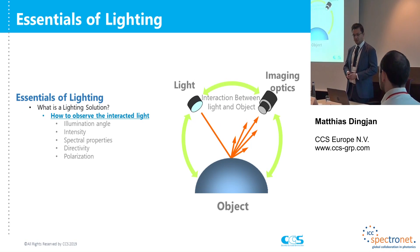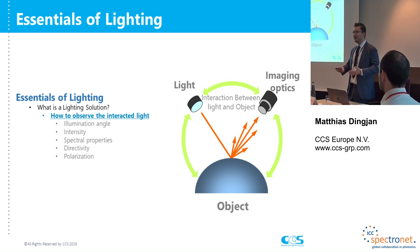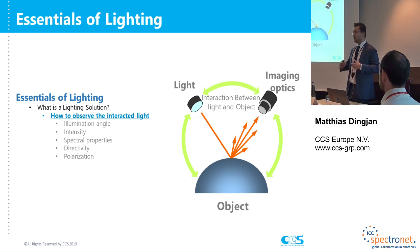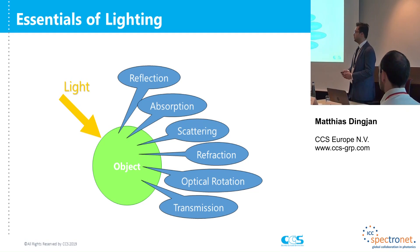For us, CCS is a lighting company. These components are very crucial when selecting a proper light source. Knowing how to position your light source will also have an impact on how you observe the interactive light on your object, because changing just one thing can have a lot of impact. If you change your illumination angle you might not highlight the features you want to see. If you have too high an intensity you might obscure things, or if you use a blue light on a red object, chances are you will not see anything.